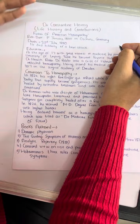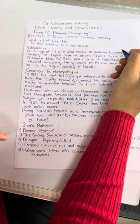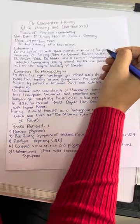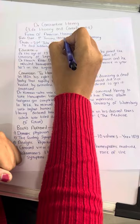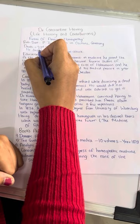death anniversary, education, conversion to homeopathy, and what are the different books authored by Dr. Constantine Herring. What is the birth date? It is 1st January 1800 in Ausset, Germany.